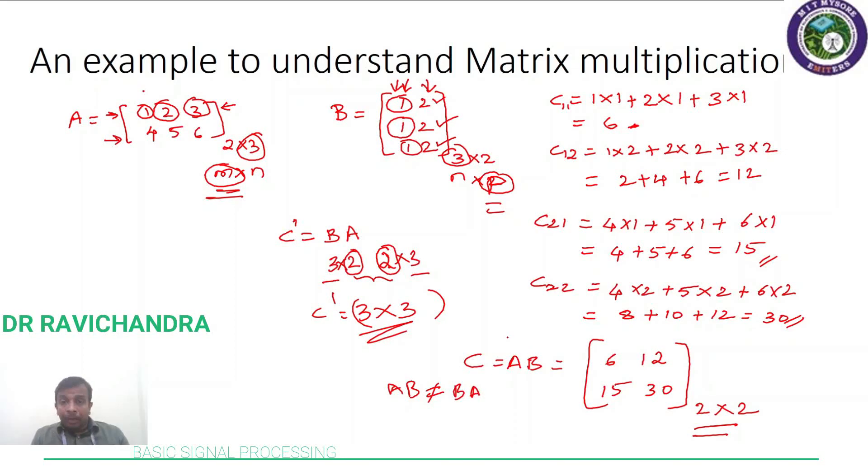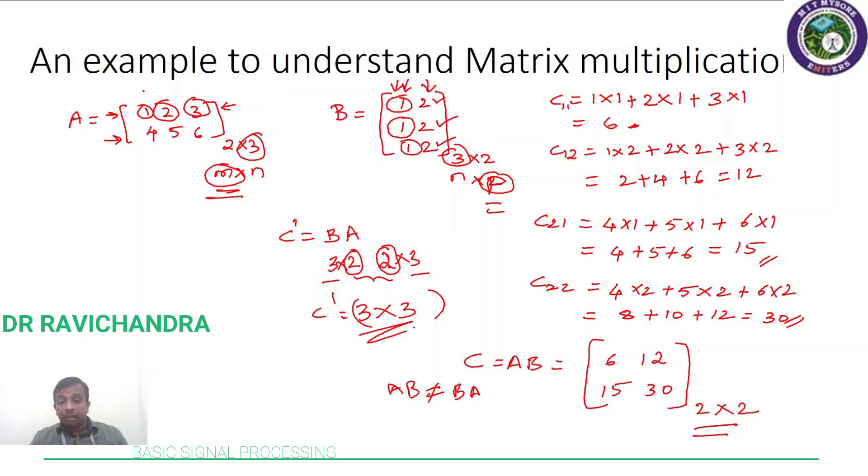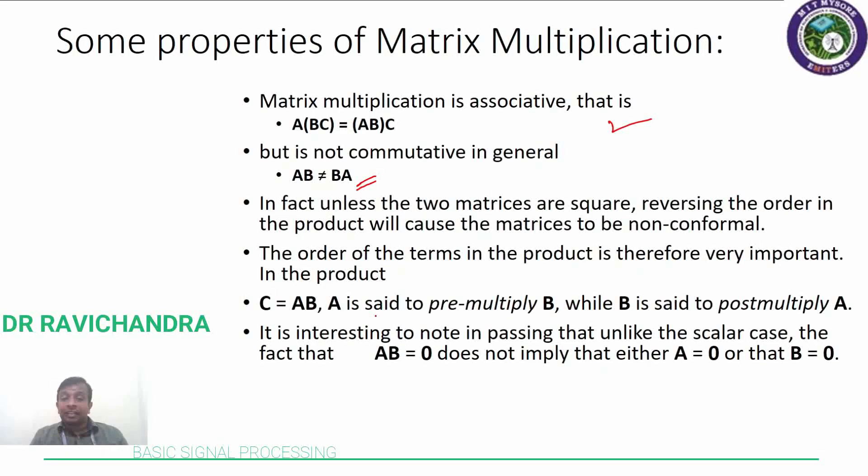So we have in a way from the rules of matrix multiplication derived that AB is not equal to BA, that is matrix multiplication is not commutative in nature. AB is not equal to BA, which was evident from our calculation of dimensions: 2×2 versus 3×3. So AB is not equal to BA in case of matrix, whereas in algebra 2×3 is equal to 3×2.